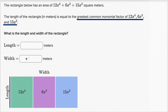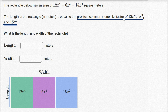The key realization here is that the length times the width is going to be equal to this area. And if the length is the greatest common monomial factor of 12x to the fourth, 6x to the third, and 15x squared, then we can factor that out, and what we have left over is going to be the width. So let's figure out what the greatest common monomial factor of these three terms is.